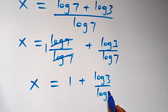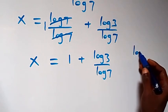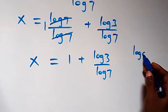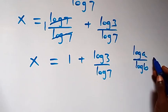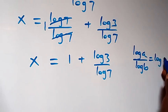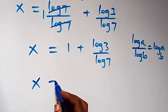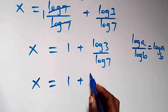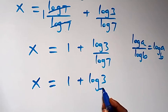Then we have x equals 1 plus log 3 over log 7, which we can rewrite using the change of base formula — log a over log b equals log a to base b. So what we have becomes x equals 1 plus log 3 to base 7.